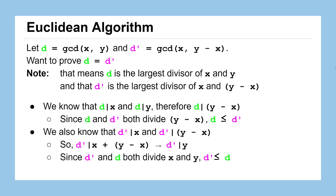Now look at what we have: d is less than or equal to d prime, and d prime is less than or equal to d. The only way both inequalities can be true simultaneously is if d and d prime are equal. We have proven that the greatest common divisor of x and y equals the greatest common divisor of x and y minus x. We can now use the Euclidean algorithm with confidence it will always give a correct result.